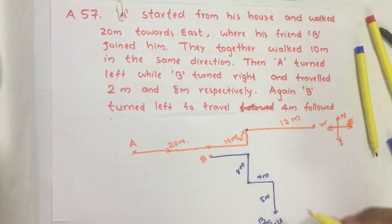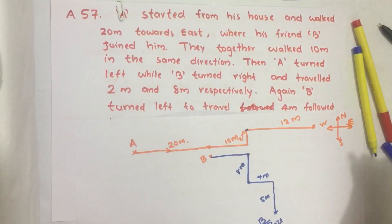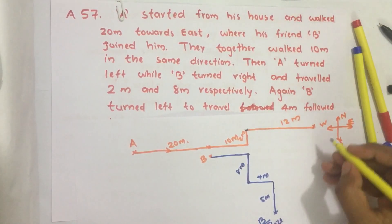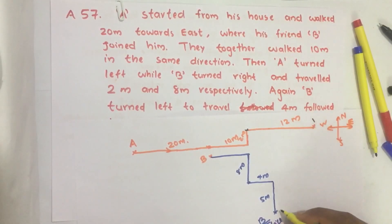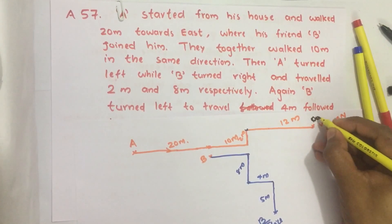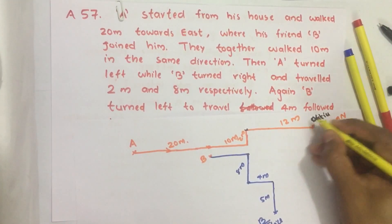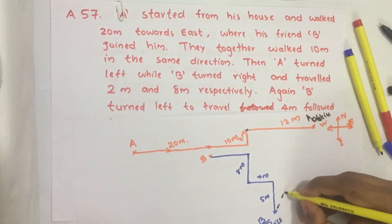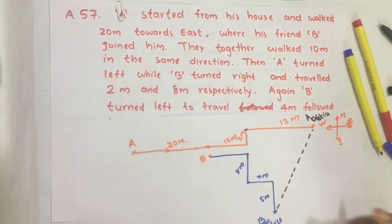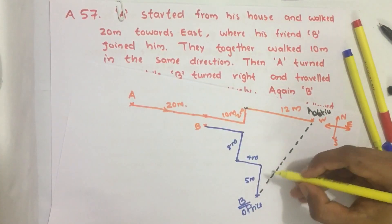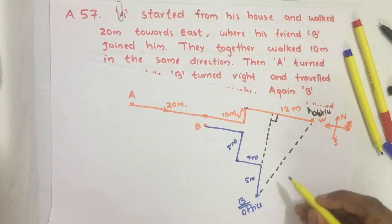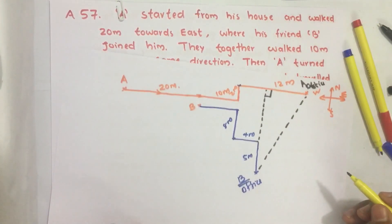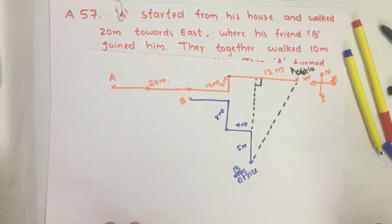So here they are asking what is the shortest distance between A and B. We know the shortest distance is here. This is office of A. This is the shortest distance. We can see a right angled triangle here. If we know the two sides of right angled triangle, we can find the third side.